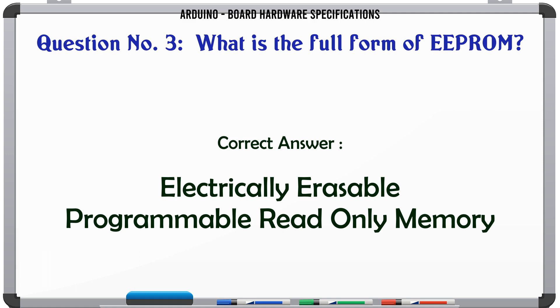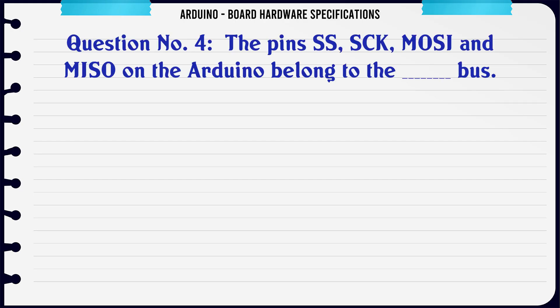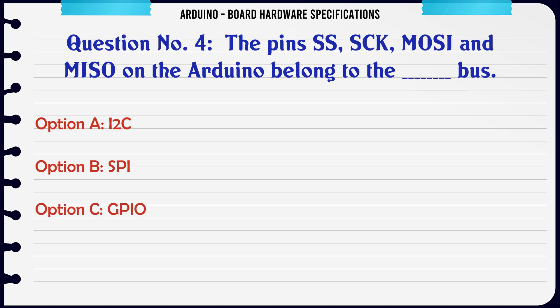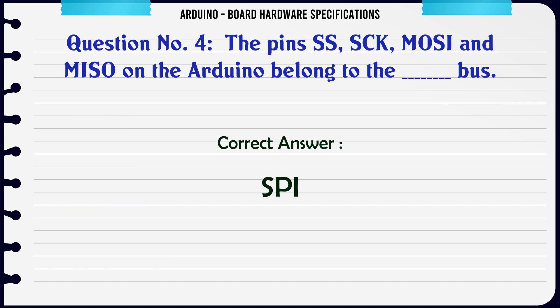The pins SS, SCK, MOSI, and MISO on the Arduino belong to which bus? A: I2C. B: SPI. C: GPIO. D: Ethernet. The correct answer is SPI.